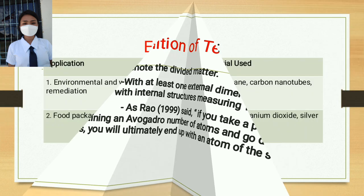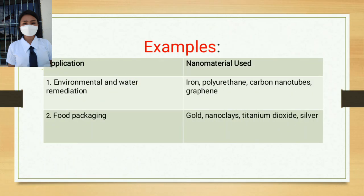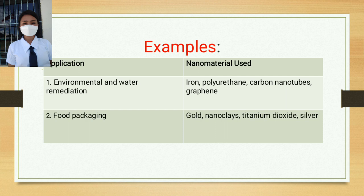For better understanding, here are examples of nanomaterials and their applications. First, environmental and water remediation, using iron, polyurethane, carbon nanotubes, and graphene. Second, food packaging, using gold, nanoclays, titanium dioxide, and silver.